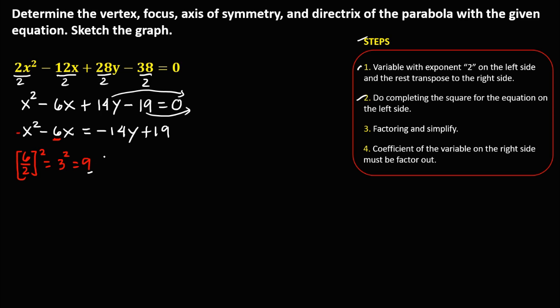Add 9 to the left side: x squared minus 6x plus 9 equals negative 14y plus 19. Since we added 9 to the left side, we also need to add 9 to the right side.